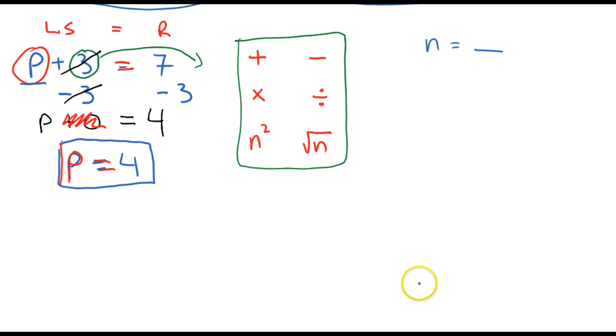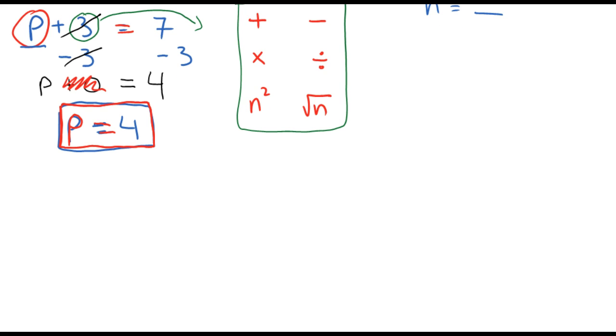And 7 minus 3 gives me a 4. So let me write my equation again. 7 minus 3 is 4. 3 minus 3 is 0. And the P is over here. It will be P plus 0 equals 4. Well, I don't really have to write that 0 here. And look what happens now. There's the P equals 4, and that's exactly what we had using mental math. Okay. Let's do a few more examples here using other operations.